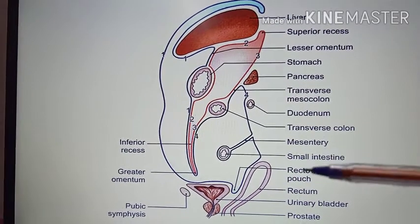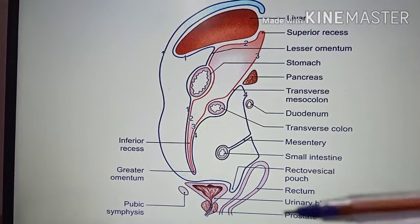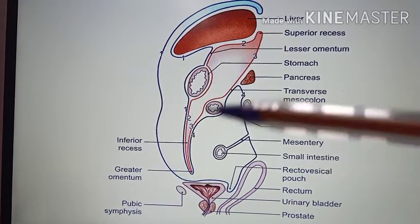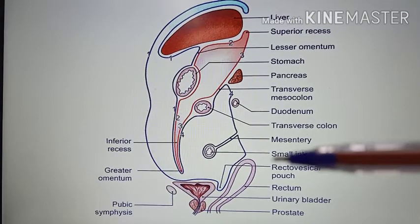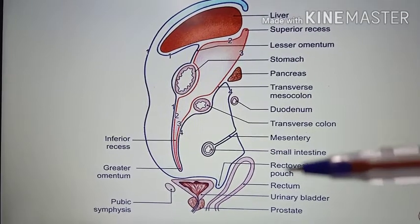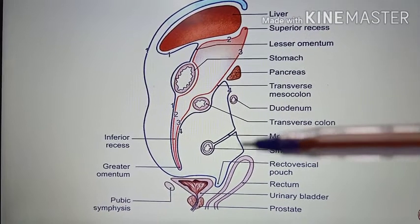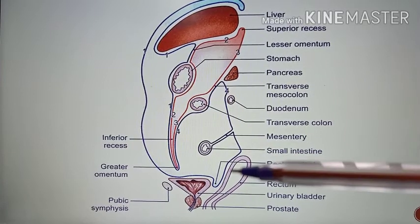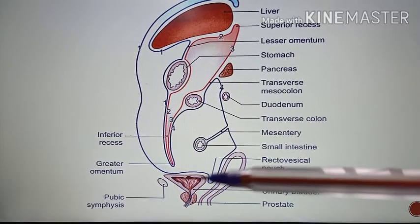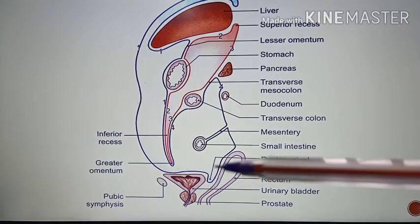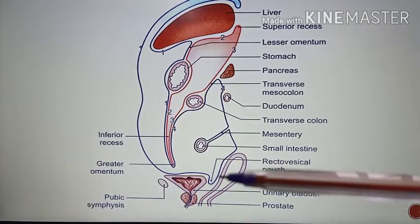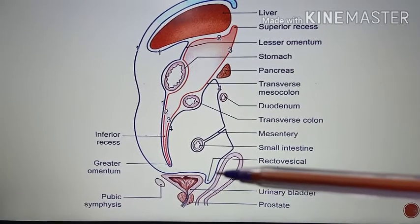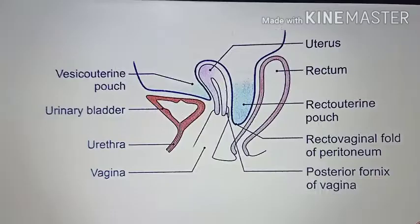The tracing of the peritoneum differs in males and females. This picture shows the sagittal section of the male. In the male, the peritoneum passes in front of the rectum and behind the urinary bladder, forming a pouch called the rectovesical pouch.